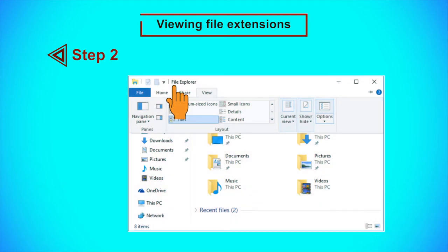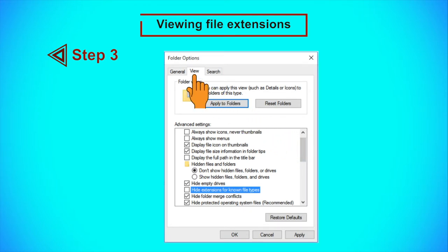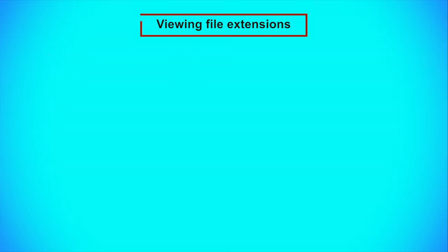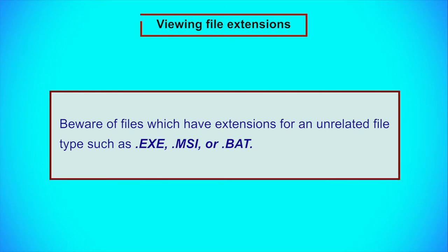Now let us see how to view file extensions. Step 1: Open File Explorer. Step 2: Click the View menu tab and then click Options. Step 3: Click the View tab. Step 4: Uncheck the box next to Hide Extensions for Known File Types. Step 5: Click OK. Notice now that file extensions will be visible on all files. Beware of files presented to you as media or office documents but which have extensions for unrelated file types such as .exe, .msi, or .bat.